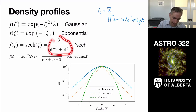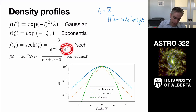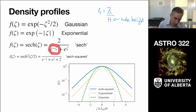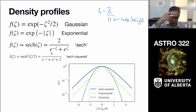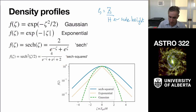As you go off the disk in the positive direction, the e to the zeta term dominates and the function limits to two e to the minus zeta. In the negative direction it limits to two e to the minus zeta again. So the sech squared profile is a compromise between an exponential form and something physically motivated — it shows the same exponential behavior far from the plane but with a smoother distribution in the center.